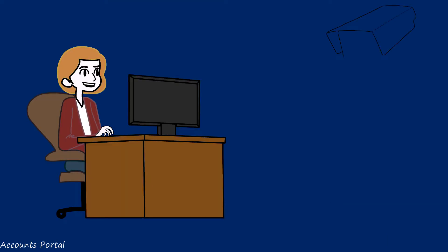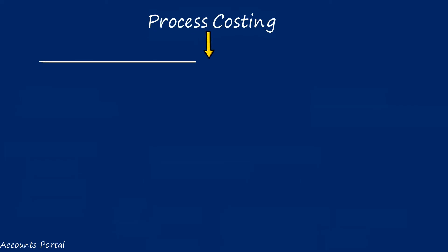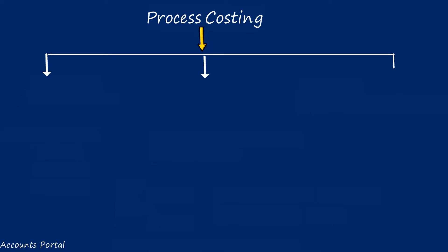To master any subject, you must pay attention to every second. Leave your thoughts in the comment section. Now, how to approach process costing problems: I divide the chapter into three sections. This is just a quick overview. The first section covers simple questions — where there are no WIP adjustments. These are called simple questions for classroom reference since the institute has not given such names.